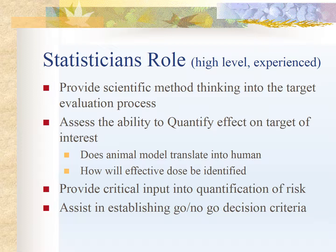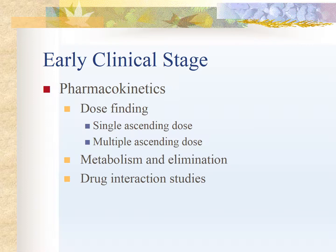For example, if we have tested drug activity in mice, the statistician knows how to translate that to humans. Statisticians also provide critical input into quantification of risk and assist in establishing go or no-go decision criteria — determining whether we should continue developing a drug or not. These are all responsibilities of the statistician in the early clinical stage.